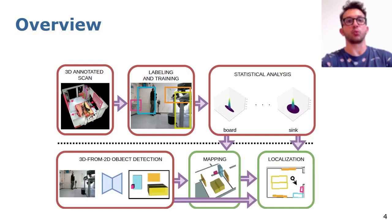This is a pre-computation that is only done once. The statistical analysis contributes to both mapping and localization, together with the 3D object detections from RGB images.